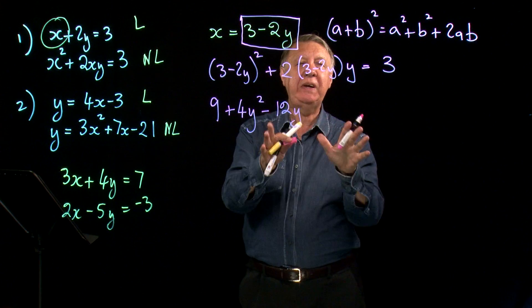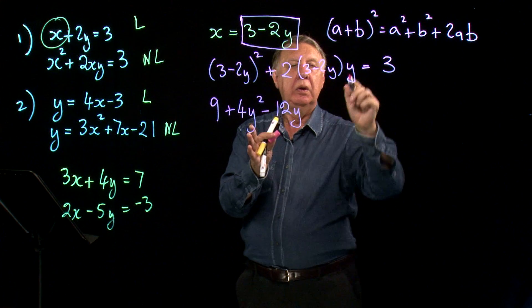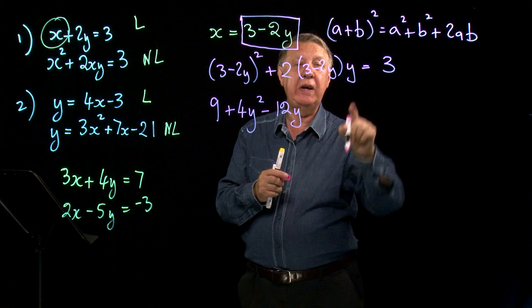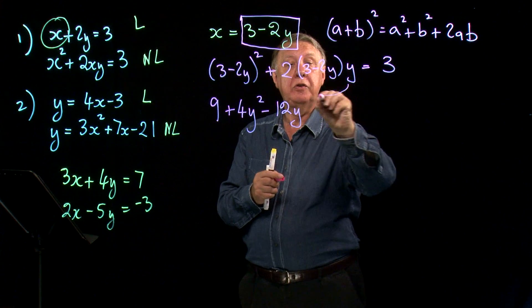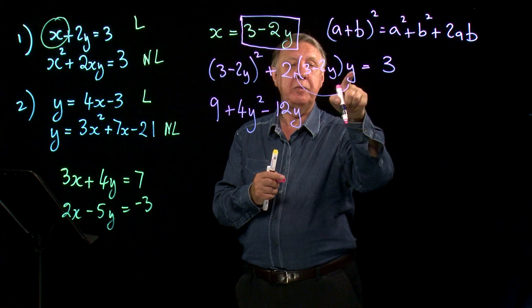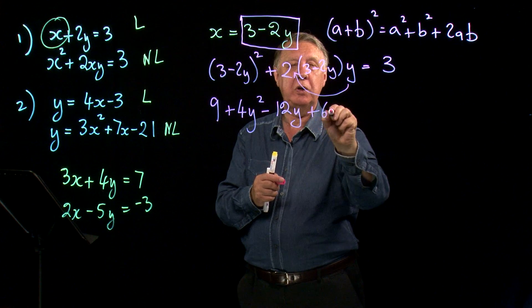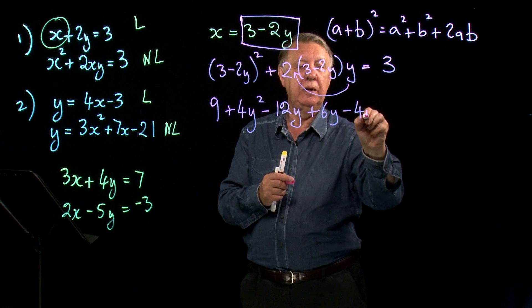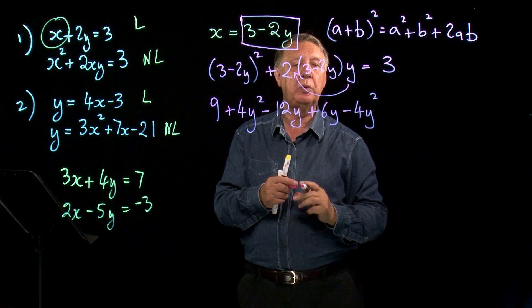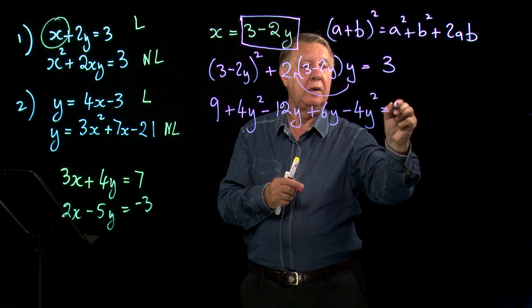Multiply this out. Again be careful. Easy to forget the y on the end. So it's not really 2 times that. It's 2y times that. So 2y times 3 is 6y. 2y times minus 2y is minus 4y² with 3.